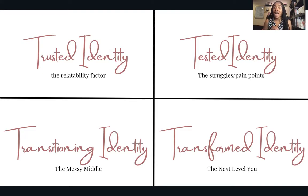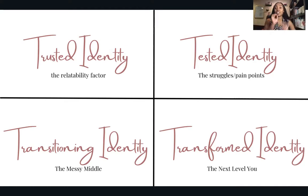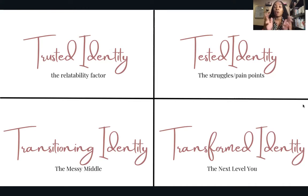The second pillar is your tested identity — the struggle, the wounds, the pain points, the things that are preventing people from getting to the next level. You don't just want to always speak to the pain points; it's important to balance it with the other pillars. When I launched my Elevate Method certification program, I talked about coaches who have piecemealed their way to success — taking this masterclass, reading this blog, watching YouTube videos — versus coming into a comprehensive coaching container where you get support on all levels.